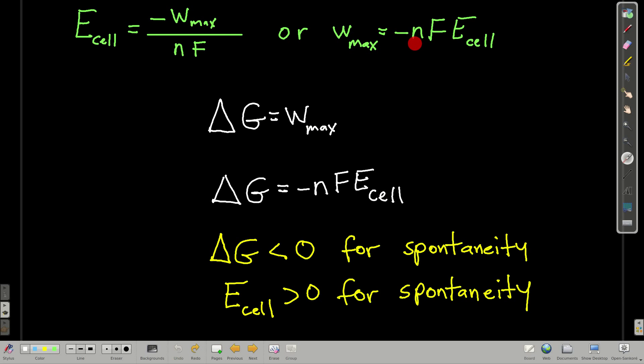The theoretical maximum is equal to negative, the number of moles of electrons transferred, times Faraday's constant, times the cell potential. But we also know that the maximum amount of work that can be done by a process is equal to delta G for that process. So we can say that delta G is equal to negative nFE of the cell.